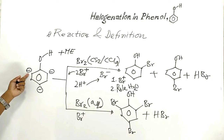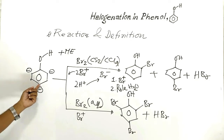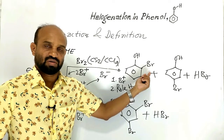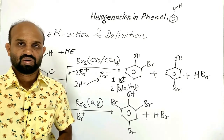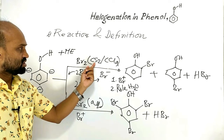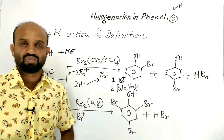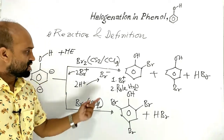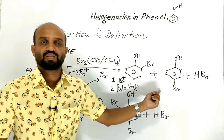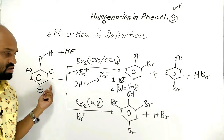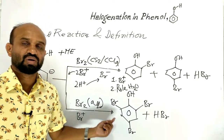When one or more hydrogen atoms are replaced from an organic compound like benzene by halogen atoms like bromine, then the reaction is known as halogenation. So, halogenation of phenol occurs in the presence of bromine solution in carbon disulfide or carbon tetrachloride, and also in the presence of bromine solution in water. Now let's understand why bromine in carbon disulfide produces ortho-bromophenol and para-bromophenol, while bromine in water produces 2,4,6-tribromophenol from phenol.